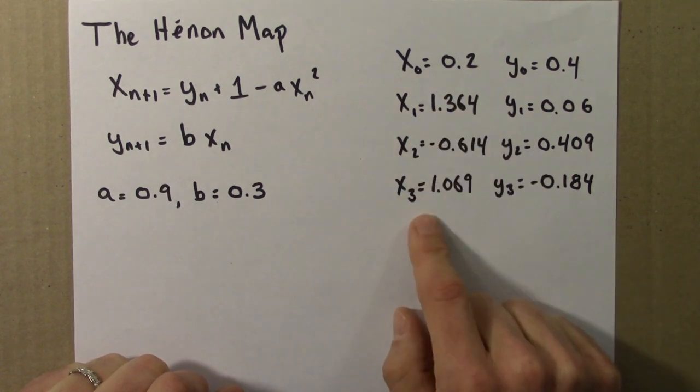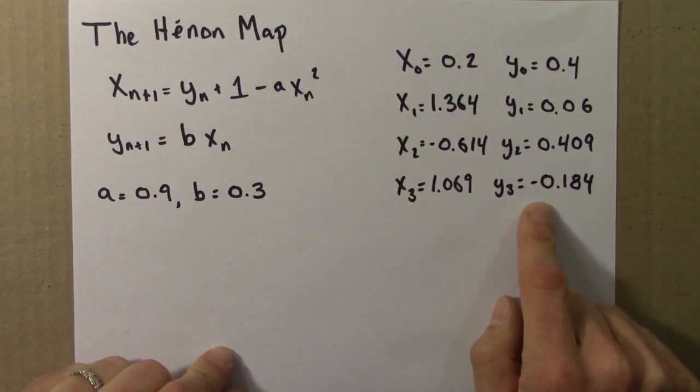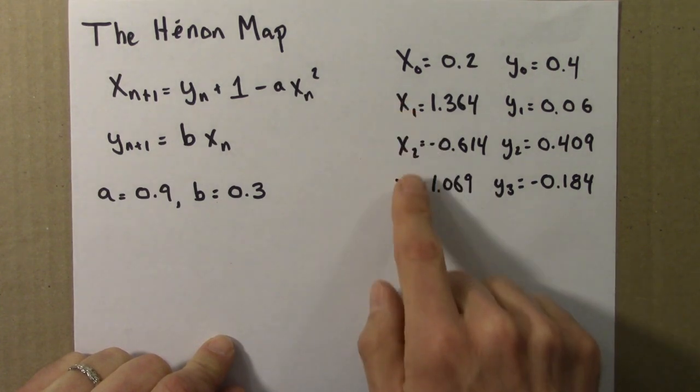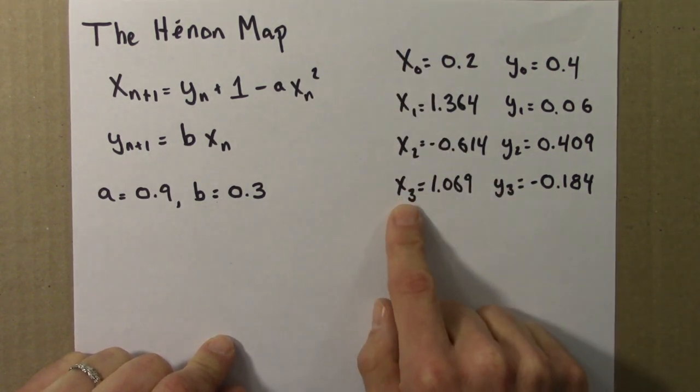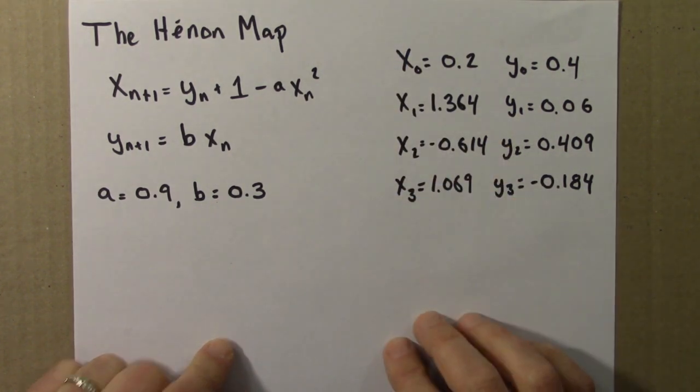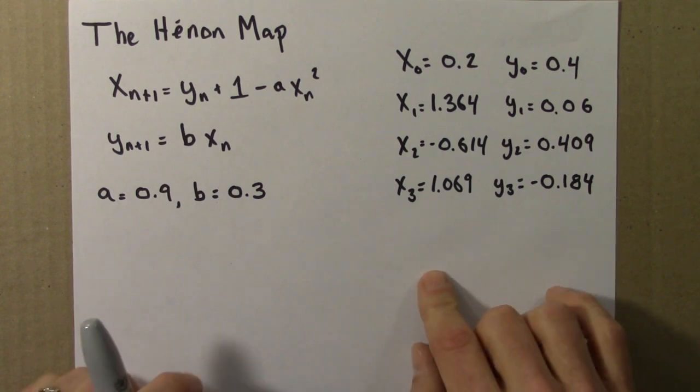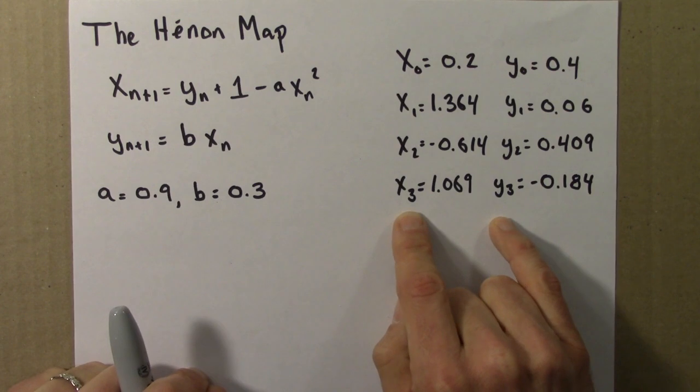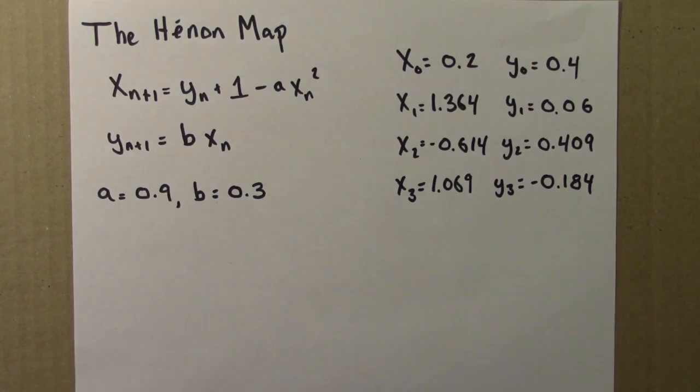So we can plot the time series for x just like we did for the logistic equation, and we can plot the time series for y as well. Those will both be one-dimensional functions. But another thing we can do is plot x against y, similar to how we plotted x against y for these two-dimensional differential equations.